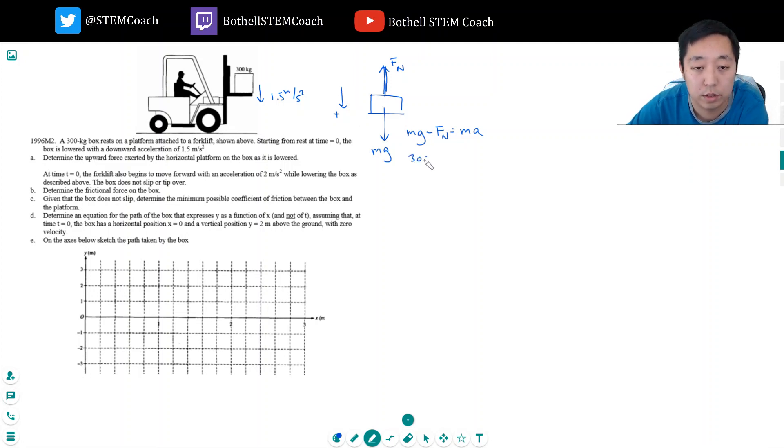So I could say this is 300... well, this is 300 kilograms times 10 meters per second squared, minus fn equals 300 times 1.5, and that's 450 newtons. Oh, this would be 3000 newtons, sorry, my bad.